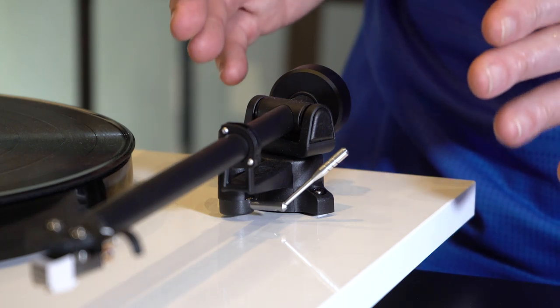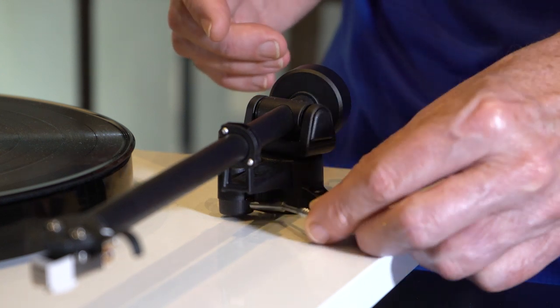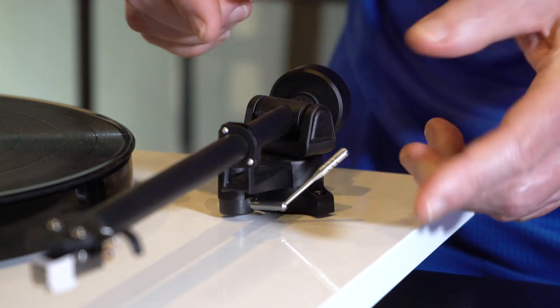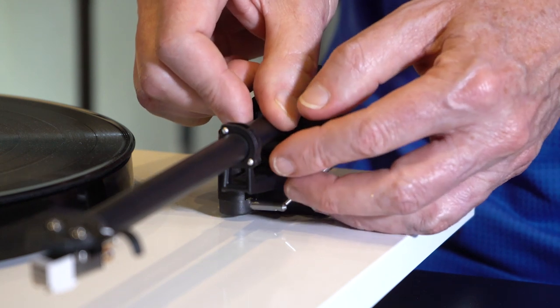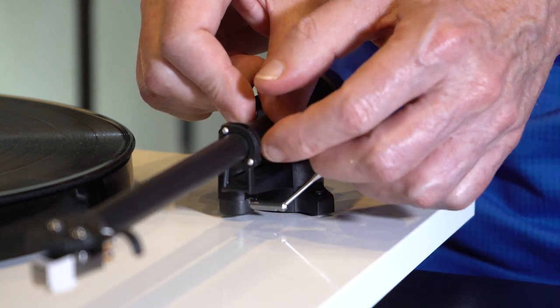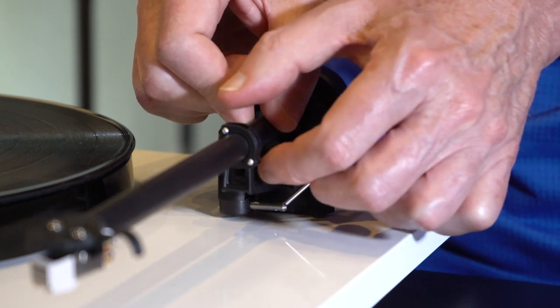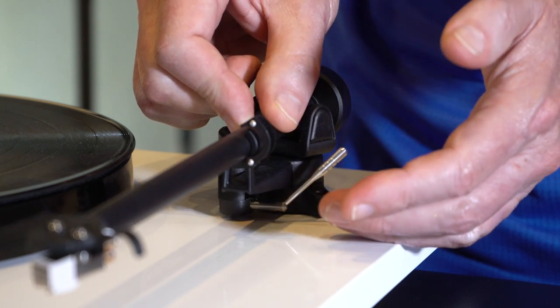So the first thing we want to do is make sure the cue lever is in the up position. This is down. This is up. And then we want to unlock the tonearm. It's a good idea to hold the tonearm so it doesn't accidentally fly across the record. So hold it with one hand and then unlock the mechanism right here with the other.